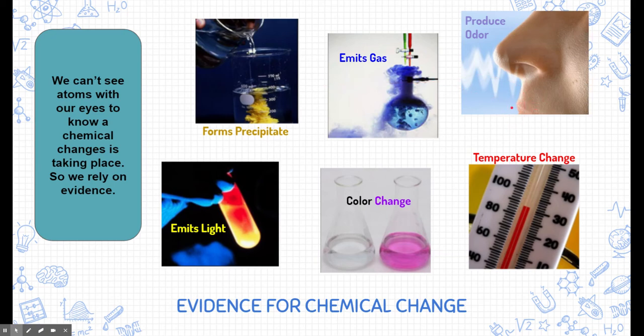If a substance that typically had one odor starts producing a different odor, or if it had no odor and starts producing an odor, that is evidence that a chemical change is most likely taking place.